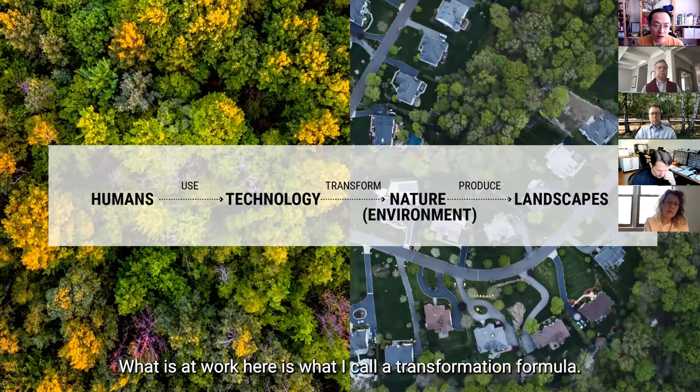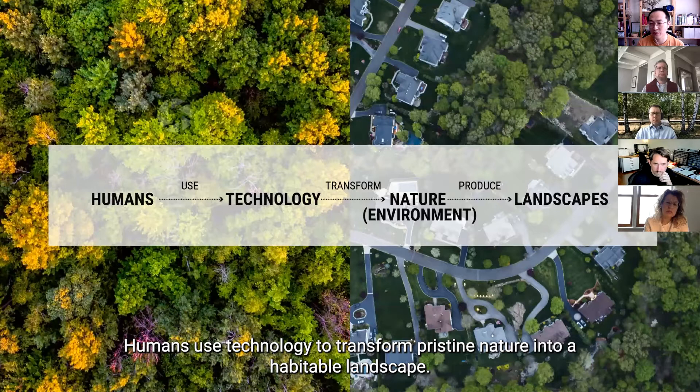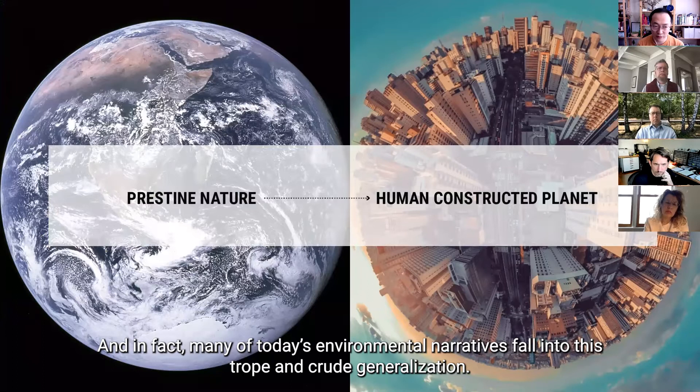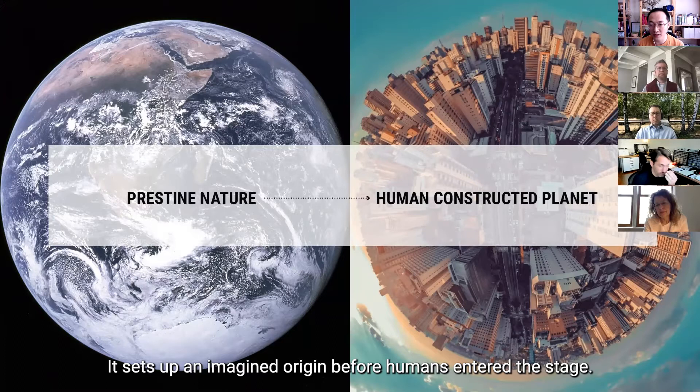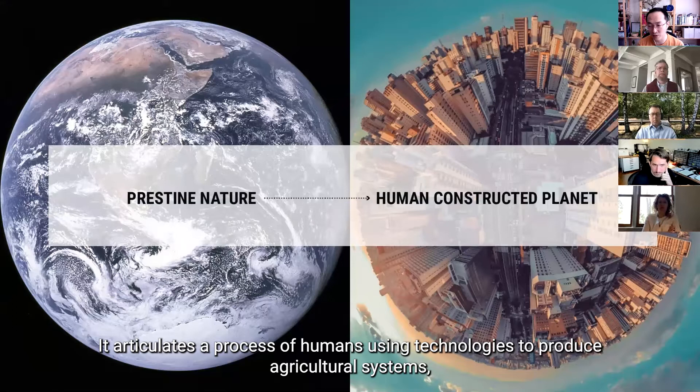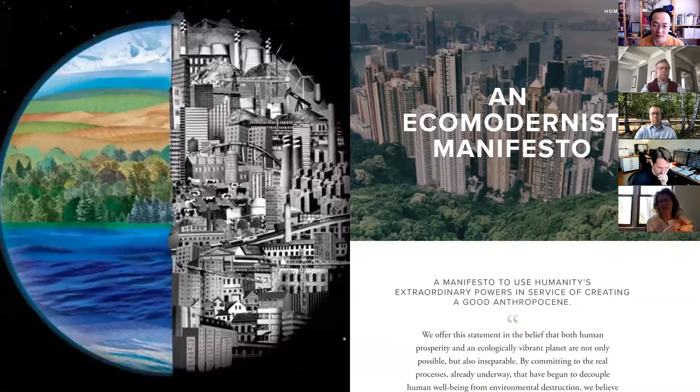And what is at work here is what I call a transformation formula. It's basically humans use technology to transform pristine nature into a habitable landscape. And in fact, if you think about it, many of today's environmental narratives fall into this trope and this crude generalization. Think about Anthropocene. It sets up an imagined origin before humans enter the stage. It articulates the process of humans using technologies to produce agricultural systems, global industries and megacities, and finally a human constructed planet.